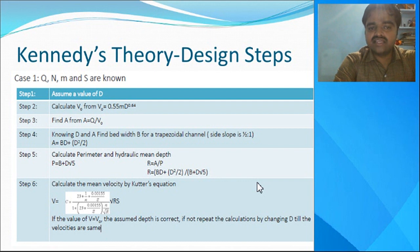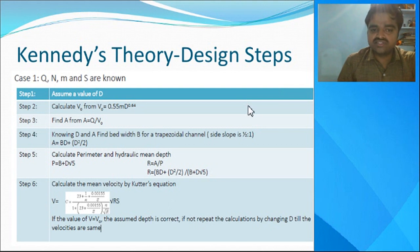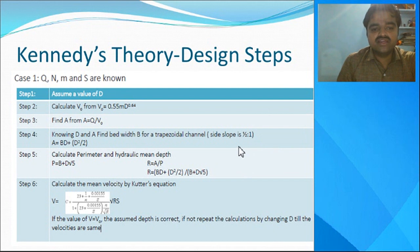Step one: assume a value of d (depth), for example 2 meters. Initially you should assume the depth as 2 meters. Then calculate V₀ (critical velocity) using the formula: V₀ = 0.55 × m × d^0.64. Here d is the assumed depth (2 m) and m is the critical velocity ratio given in the problem. Then go for the standard equation: Area = Q / V₀.